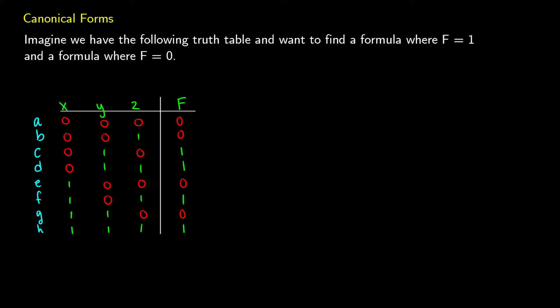Imagine we have a truth table such as the one below, and we want to find a formula for all the rows that are true — what makes f true — or a formula for what makes f false.